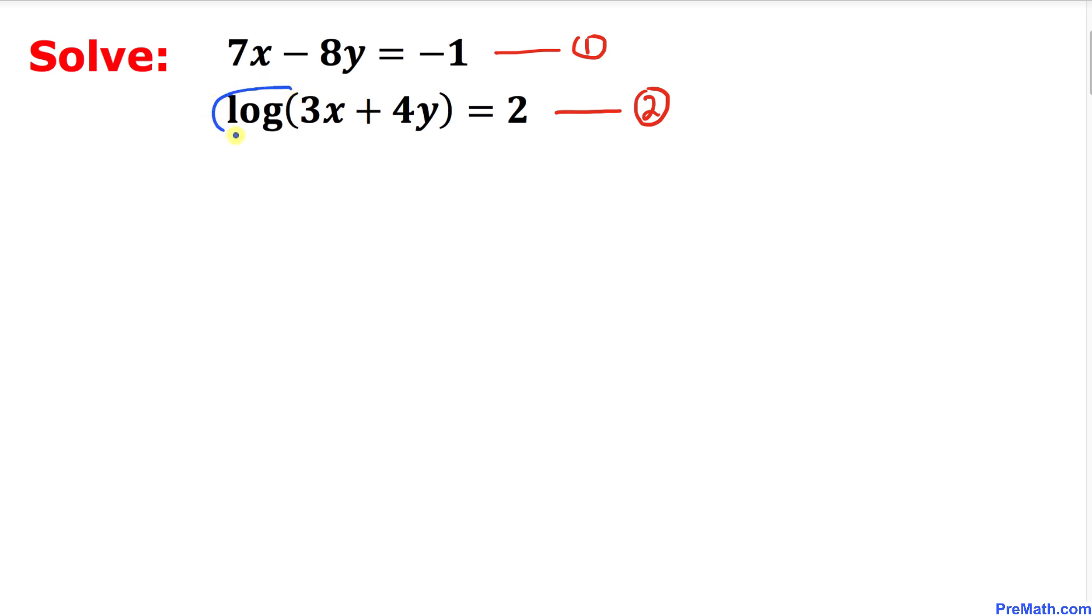Now let's focus on this second equation. Here I've copied it down. We can see that the base for this log is missing. This kind of log is called common log, and by default its base is 10. That means if there's no base, the base must be 10 by default.